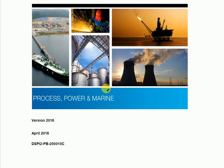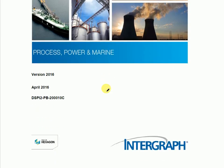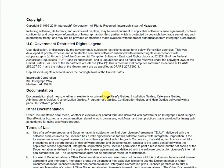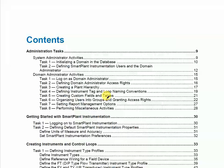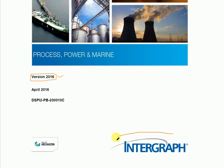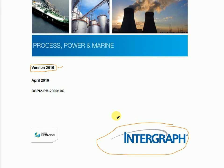Now let us come to what SPI is and what modules are available. SPI is basically a database-type software, and there are various versions available: 2013, 2016, 2018, and so on. I recommend all of you go with the 2016 version, because most companies are using 2016 right now. This software is basically developed by Intergraph — Intergraph is the owner of this software.